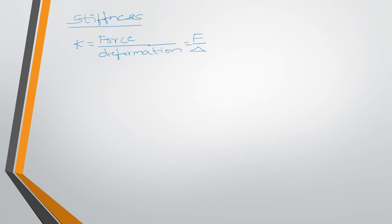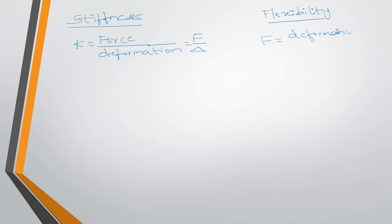Now let us see the flexibility definition. Flexibility is exactly opposite to stiffness. The name itself says it: stiffness means stiff and strong, while flexibility means easily changeable. It can be expressed as F, where flexibility F equals deformation divided by force — meaning how much deflection or deformation is created in an object by applying a unit force. That is flexibility.